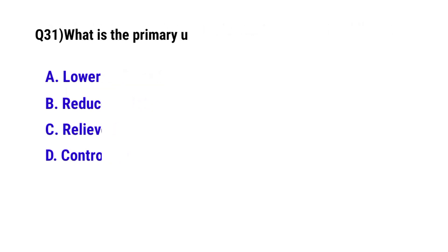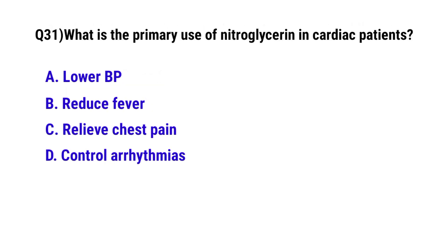Question number 31: What is the primary use of nitroglycerin in cardiac patients? The correct option is C: Relief of chest pain.